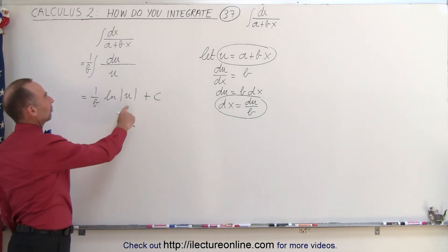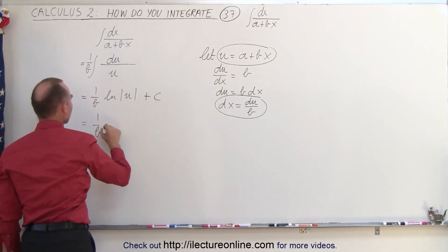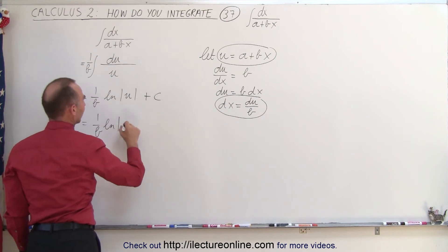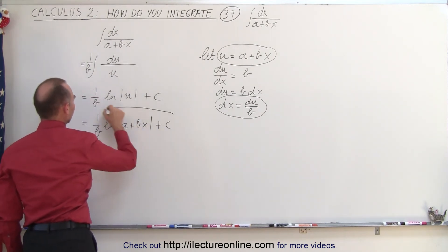Then we need to substitute back in what u is equal to, so this becomes equal to 1 over b times the natural log of a plus bx plus a constant of integration.